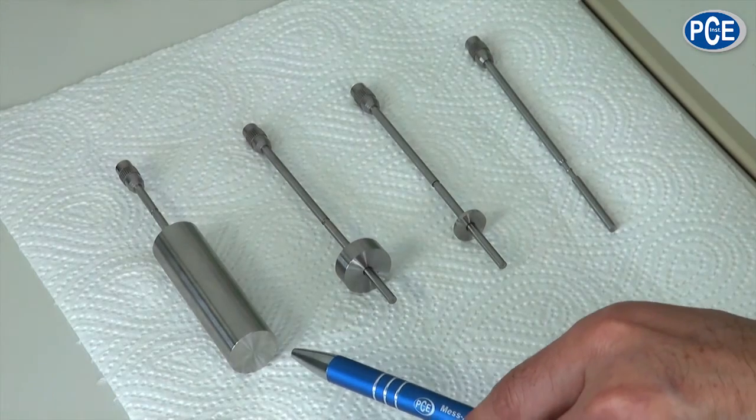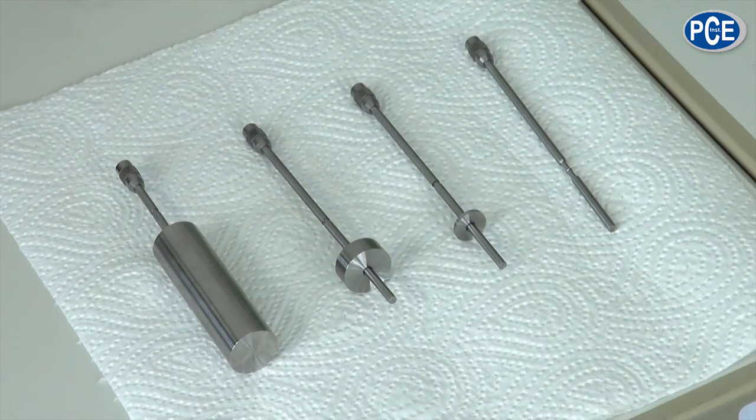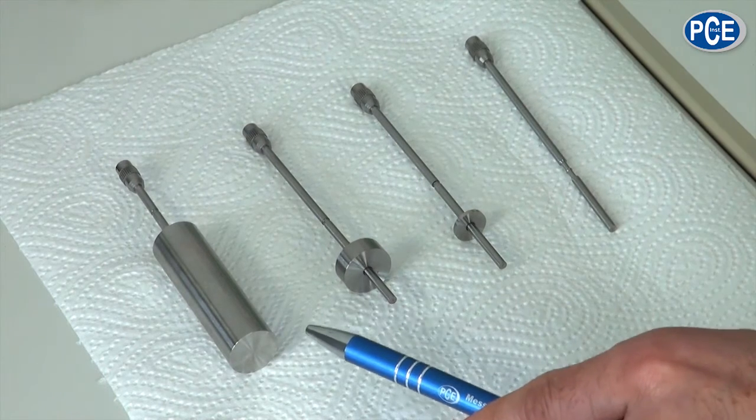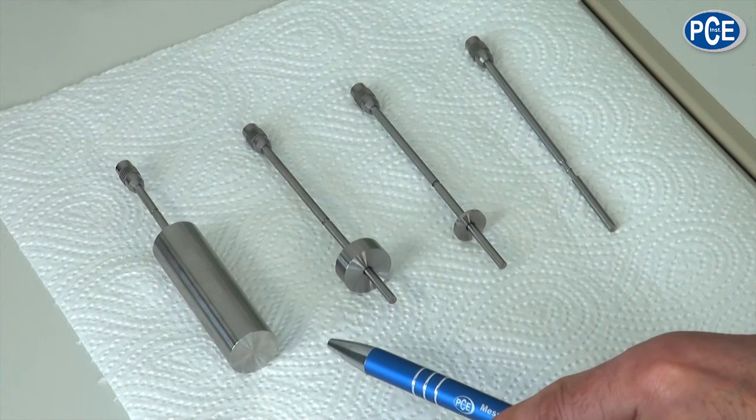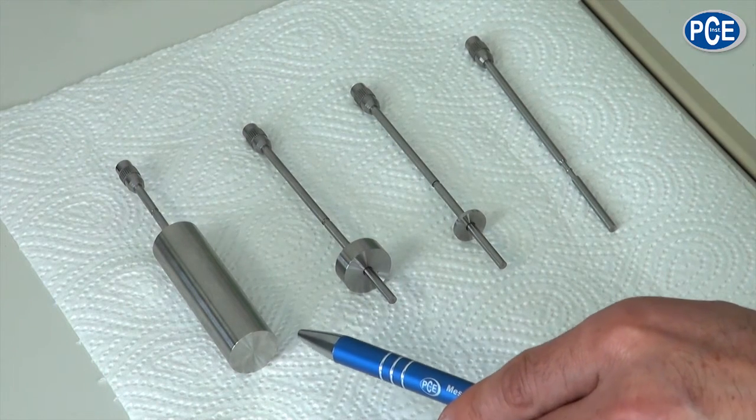The rotation body number 1 is the largest rotation body and is used for the lowest viscosity. It covers a measuring area of up to 1000 mPa·s.